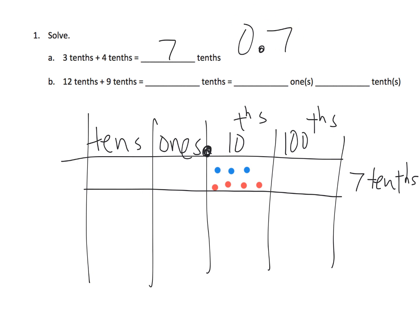And then similarly, we can look at this next example, 12 tenths plus 9 tenths. So this is where some parents and teachers are kind of getting a little shaky on this, because it's written kind of in an interesting way. So if we say 12 tenths, well, what does 12 tenths look like?